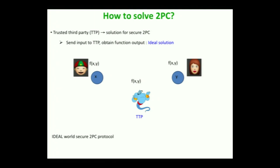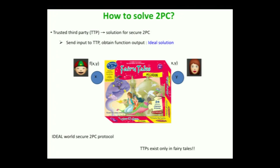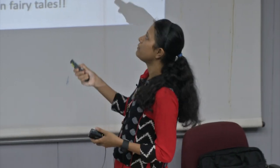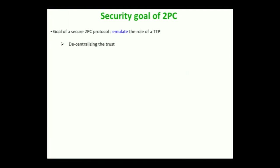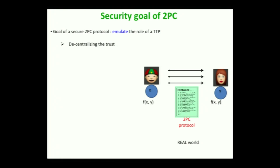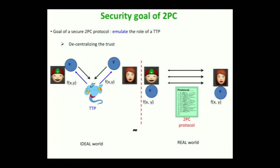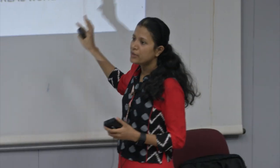This is called ideal world secure two-party computation, but trusted third parties exist only in fairy tales. In the practical world we don't have such TTPs, so 2PC protocols suggest distributing our trust. We run a protocol between the parties themselves and at the end they know only the function output and nothing else. In a sense, this protocol simulates the effect of a trusted third party. This is the goal of any 2PC protocol — to emulate the effect of having a TTP.